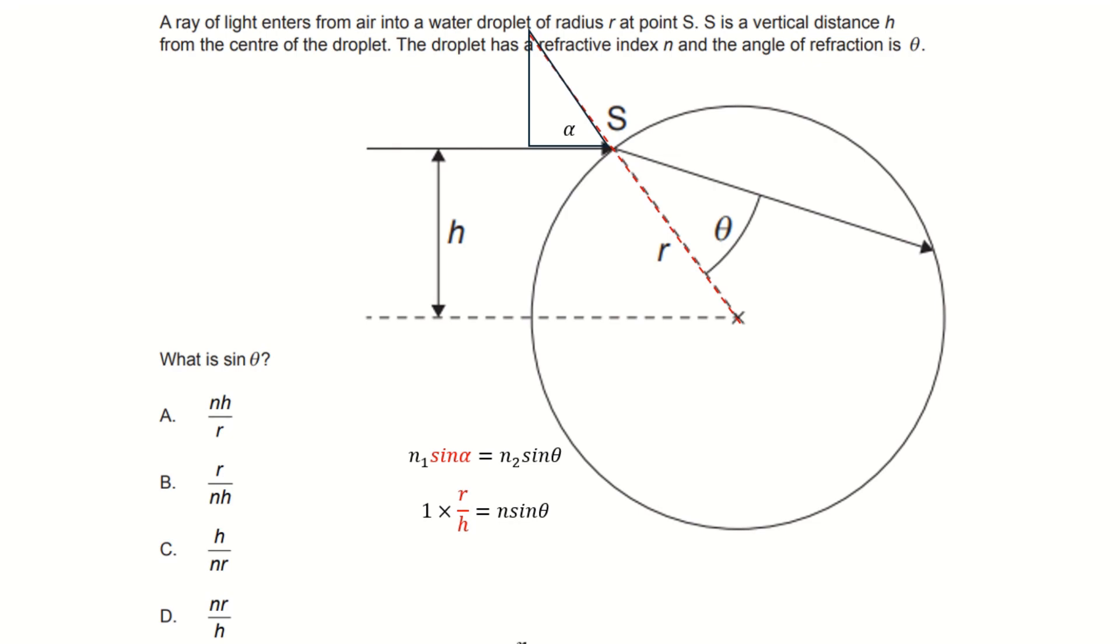Because as you can see there, we've got things in the form that we want. We've got R over H equal to N sine theta. Well, all we have to do is bring that N to the bottom, which gives us our answer B.